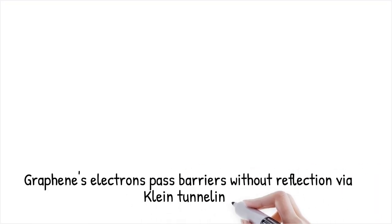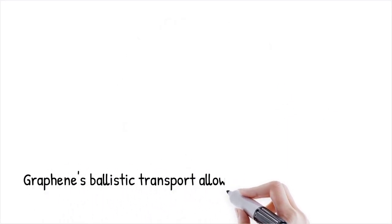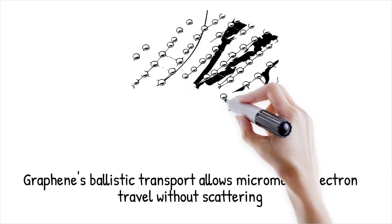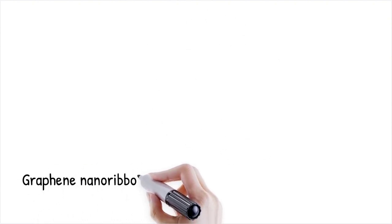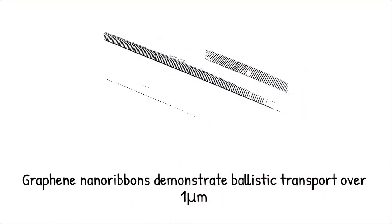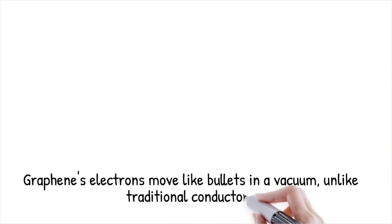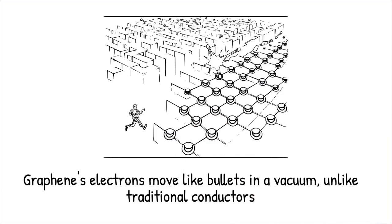Graphene's electrons follow distinct quantum rules, like a train that always stops at specific stations regardless of external conditions, while regular conductors behave more unpredictably. Klein tunneling, a relativistic quantum effect, allows graphene's electrons to pass through high-energy barriers without reflection. Additionally, graphene supports ballistic transport, meaning electrons travel micrometer distances without scattering, a stark contrast to metals where mean free paths are much shorter due to phonon interactions. This contradicts conventional transport theory, where scattering is expected to dominate at room temperature. Graphene nanoribbons, for example, show ballistic transport behavior at scales exceeding 1 micrometer, an effect rarely seen in classical conductors.